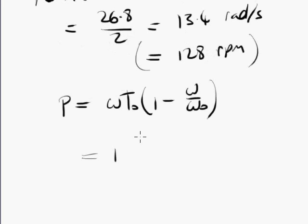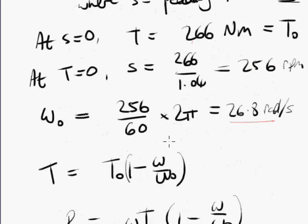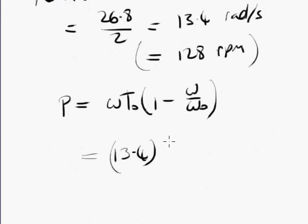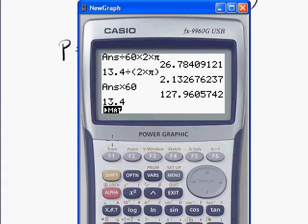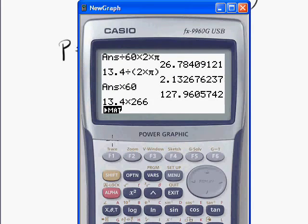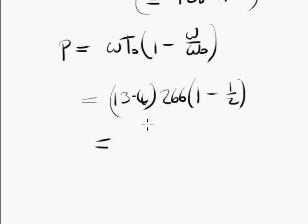The power that we have at that speed is, well, power is omega T zero, 1 minus omega over omega zero for this particular kind of power plant. So the power there is, we substitute in, for omega, we substitute in our omega zero over 2, half of our maximum speed. That's 13.4 rads per second. And we need our T zero, 266 newton meters, times 266 times 1 minus... With an omega of half omega zero, this fraction, omega over omega zero, is a half. So for that, we get 13.4 times 266 times 1 half is 1782 in units of watts.